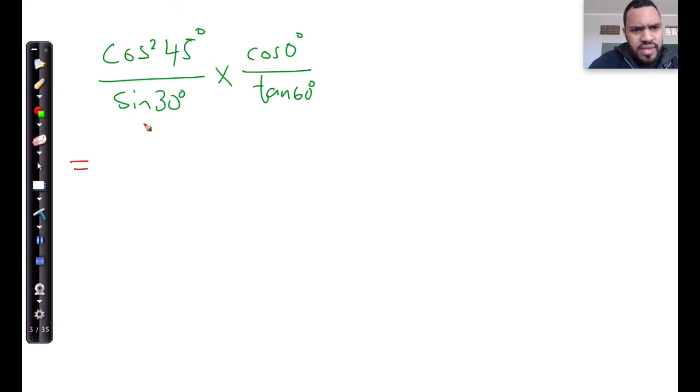Let's take the first one. Cos of 45 is actually just root 2 over 2, and I'm going to square that. That's my numerator. Divided by sine of 30—sine of 30 is actually a half—and then it's multiplied by cos of 0.